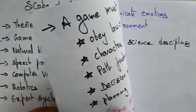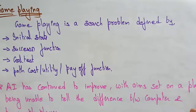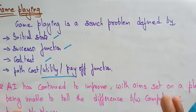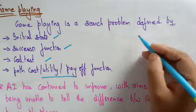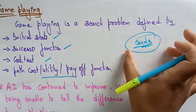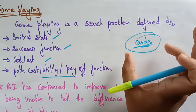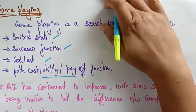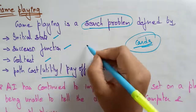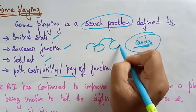First, I want to tell about game playing. Game playing is a search problem defined by initial state, successor functions, goal state, and a path cost — that is a utility or payoff function. Whenever you want to solve some game, say a card game, the artificial intelligence has to plan the game. The initial state is where you need to start to play the game, and successor functions define which function to go to next.